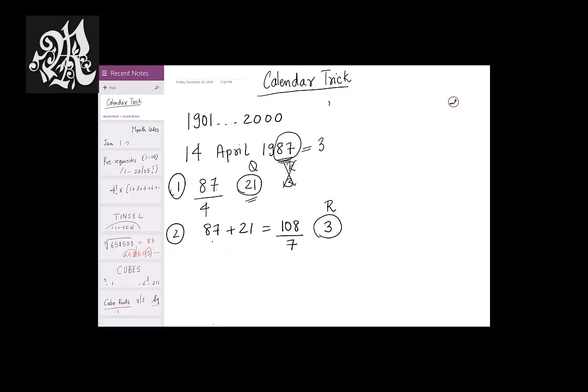For 90, for example, for the year 90, you'll find the year number to be 0. So these are the first two steps to find out any day of the calendar.